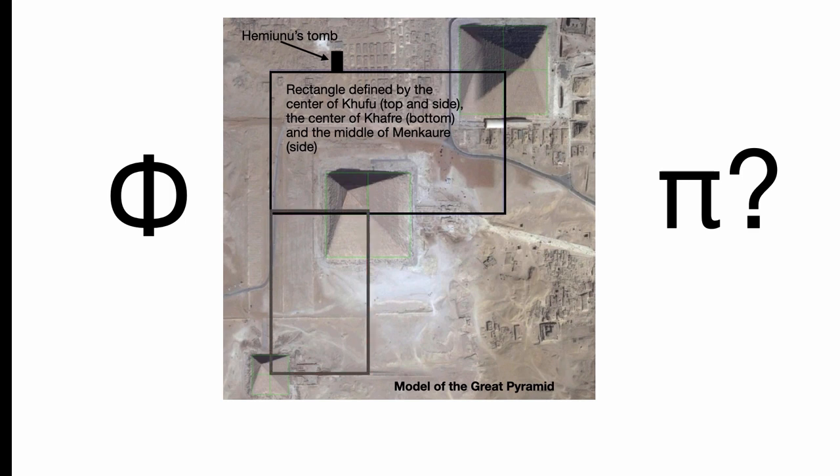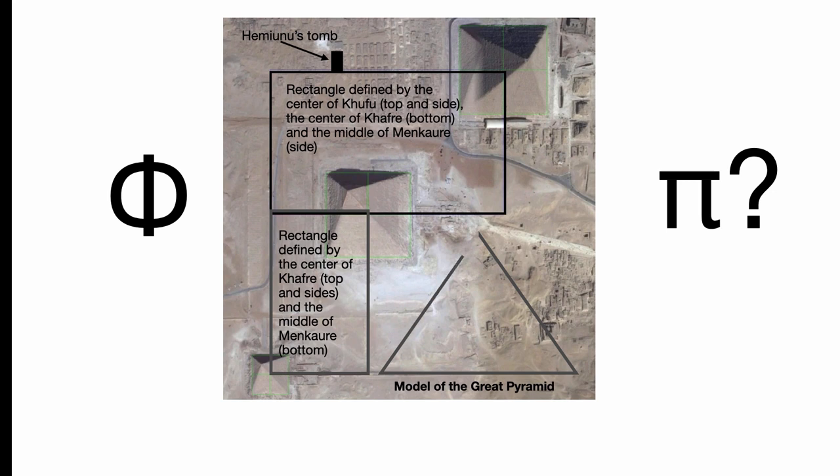So incredible. Now let's do this other triangle rectangle here that's defined by the center of Kafri and the middle of Menkara. Basically those are in Phi proportion to each other, those two rectangles. It's built into the Giza Plateau.